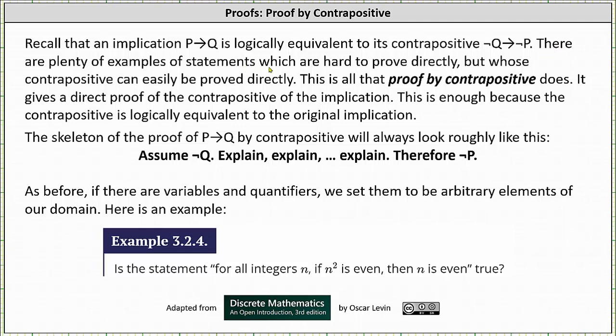There are plenty of examples of statements which are hard to prove directly, but whose contrapositive can easily be proved directly. This is all that proof by contrapositive does. It gives a direct proof of the contrapositive of the implication. This is enough because the contrapositive is logically equivalent to the original implication.